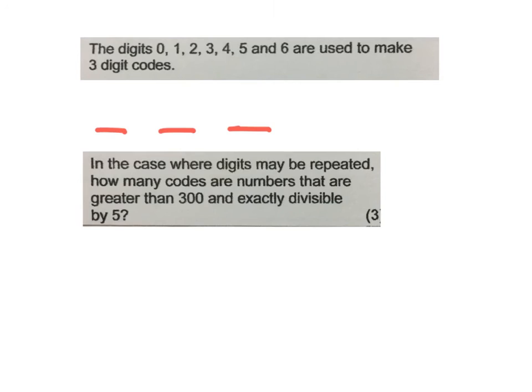Now just get your head around this one. It says, in the case where the digits may be repeated, now just reading up to there, this is what my answer would have been. But that would be wrong now because they say, how many codes are numbers that are greater than 300 and exactly divisible by five?